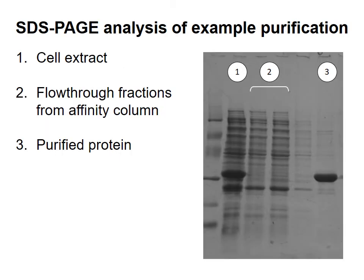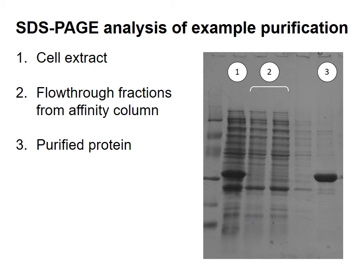This SDS-PAGE gel shows the progress of a typical affinity-based protein purification procedure. Lane 1 contains the crude cell extract — cells that have overexpressed the protein of interest and have been broken open. You can see a heavy band representing the overexpressed protein of interest, while the other bands are proteins normally produced by the bacterium. This overexpressed protein has a 6-histidine tag at its N-terminal end. The cell extract was added to a nickel-containing affinity column, and the sample that emerged contained all the proteins from the cell extract except for the thick overexpressed band, which remained behind, stuck to the nickel on the column.